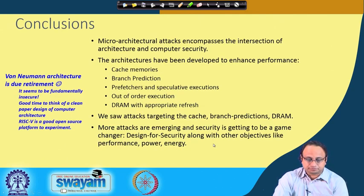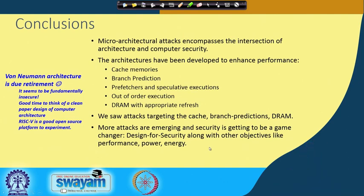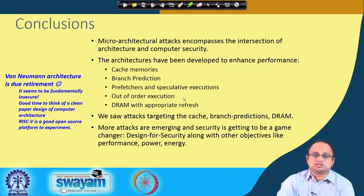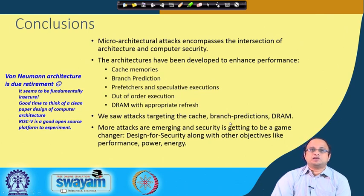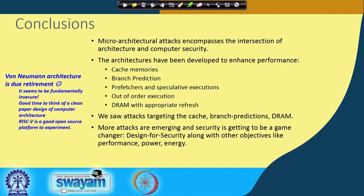To conclude, microarchitecture attacks encompass the intersection of architecture and computer security. We have seen the effects of cache memories, branch prediction, and also prefetchers and speculative execution — which have significant security impact. We saw the effect of out-of-order execution when discussing cache memories, and discussed DRAMs with appropriate refresh as an important design criterion. We saw attacks targeting the cache, branch prediction, and the DRAM, with more attacks emerging as security becomes a game changer.